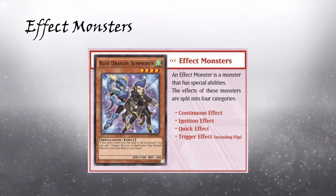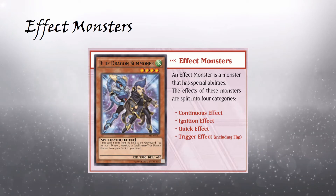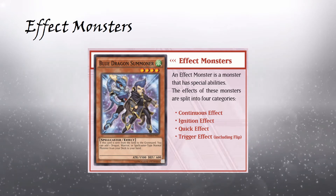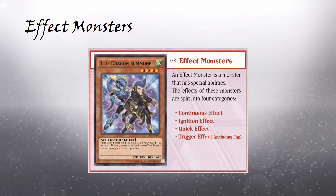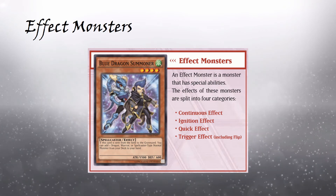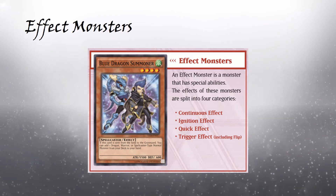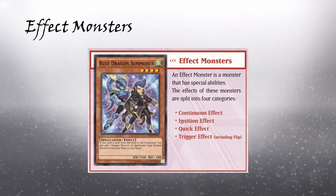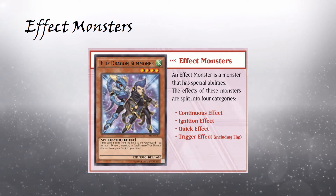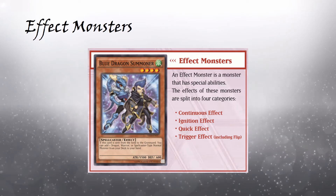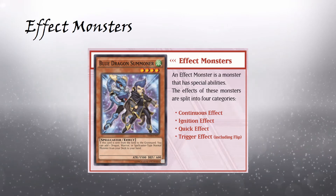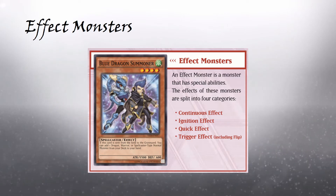In our last class, we discussed how normal monsters were being used less while effect monsters were being used more. This is because Duelists began to realize how much more versatile these effect monsters were as opposed to normal monsters. There are four categories when it comes to the effects of these effect monsters: Continuous Effect, Ignition Effect, Quick Effect, and Trigger Effect. Today we will be focusing on the Continuous Effect and Ignition Effect.